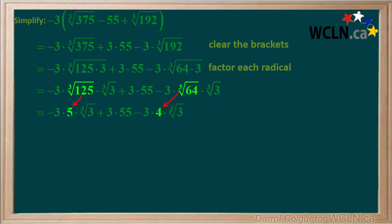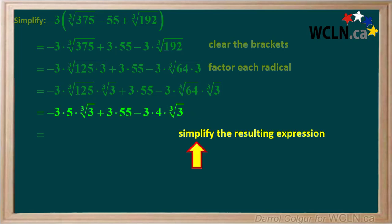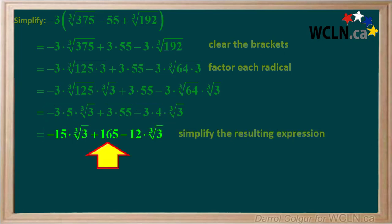The cube root of 125 is 5, and the cube root of 64 is 4. So now we have this expression. At this point we can simplify this resulting expression. Negative 3 times 5 is negative 15, 3 times 55 is 165, and negative 3 times 4 is equal to negative 12. So we are left with this simplified expression.